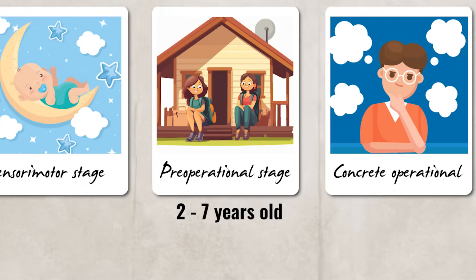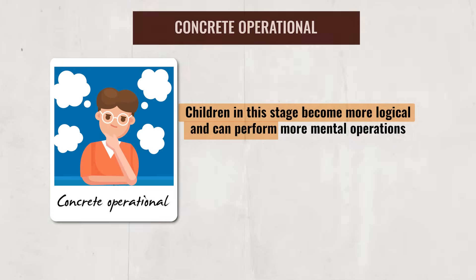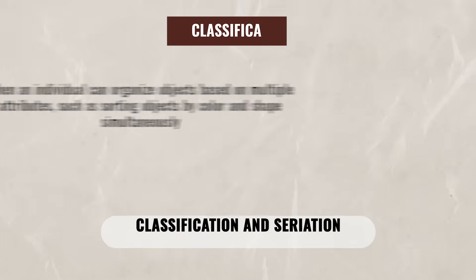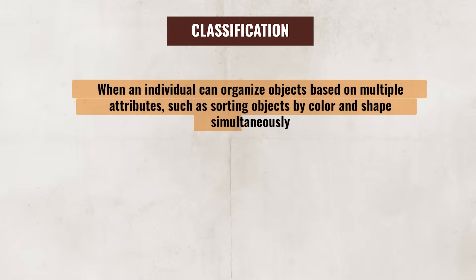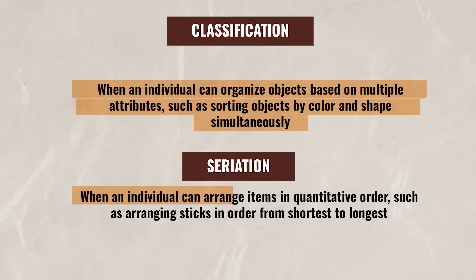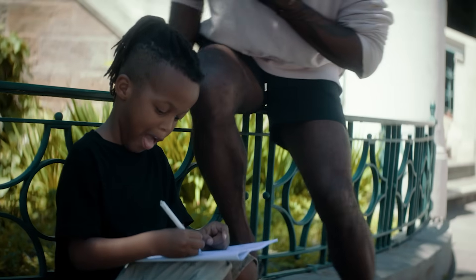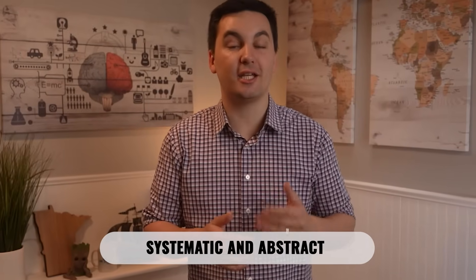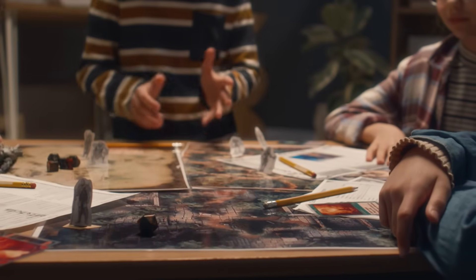When a child is around age 6 or 7, they move into the concrete operational stage. Children here become more logical and can perform more mental operations. During this stage, children can grasp concepts such as classification — organizing objects based on multiple attributes like sorting by color and shape simultaneously — and seriation, which is arranging items in quantitative order, such as from shortest to longest. While they can think logically, they still struggle with systematic and abstract thinking, but they can fix many of the cognitive errors from the pre-operational stage, such as conservation and reversibility.